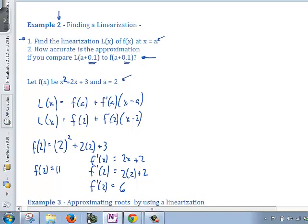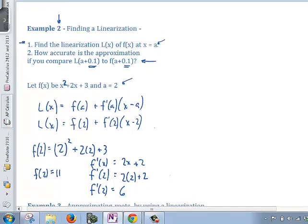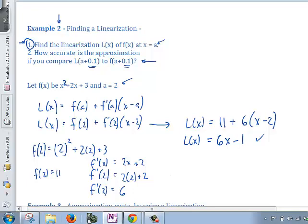Writing our linearization, I'll write it over here, l of x is equal to 11 plus, the slope is equal to 6, times x minus 2. While we go and simplify this out, we end up getting 6x minus 1, and what I'm going to do is, so this is my linearization from part 1 of the function.